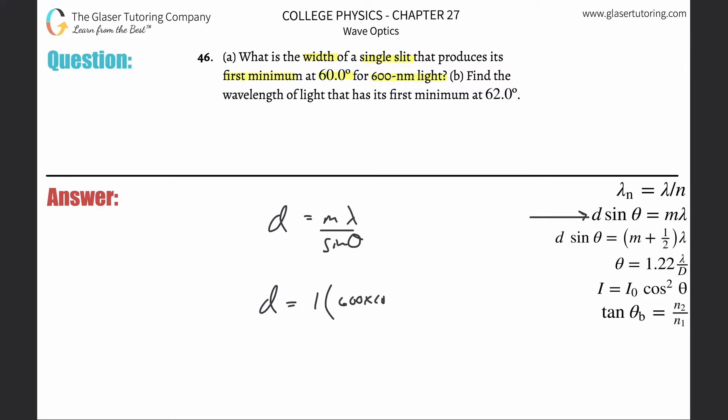So let's plug and chug: 600 times 10 to the minus 9th divided by sine of 60. So 6.93 times 10 to the minus 7th, and that's going to be in terms of meters. All right, so that takes care of letter A.